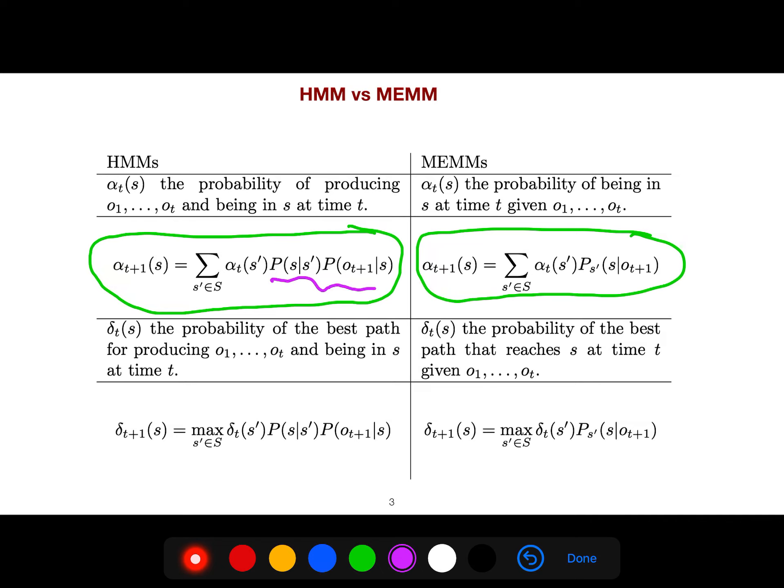And so this is the emission and this is the transition. But for MEMM, you just condition on observation, you just need the probability of state, the opposite of emission probabilities. And for inference, you see there are some changes, differences between.